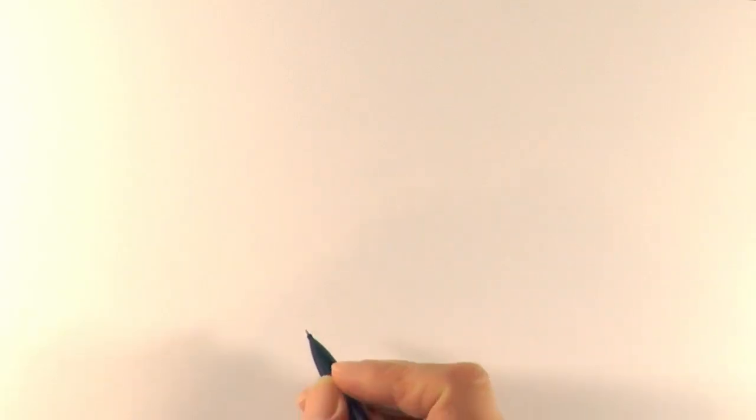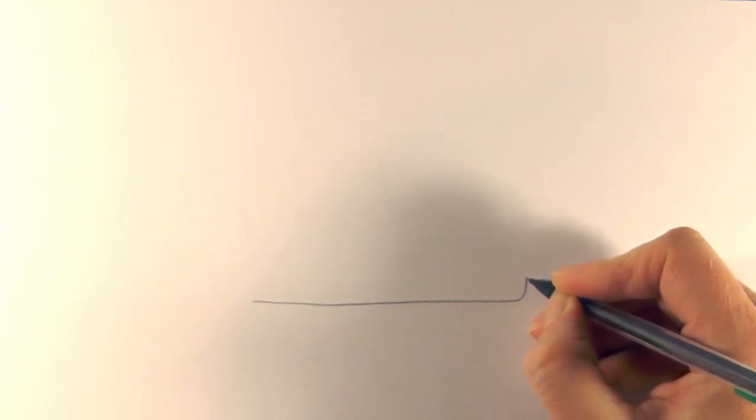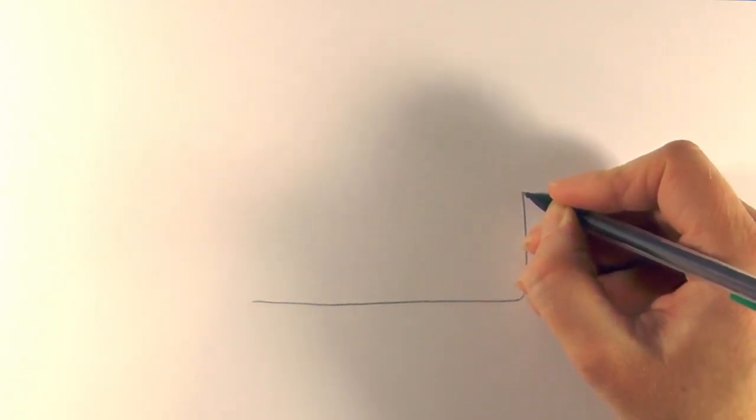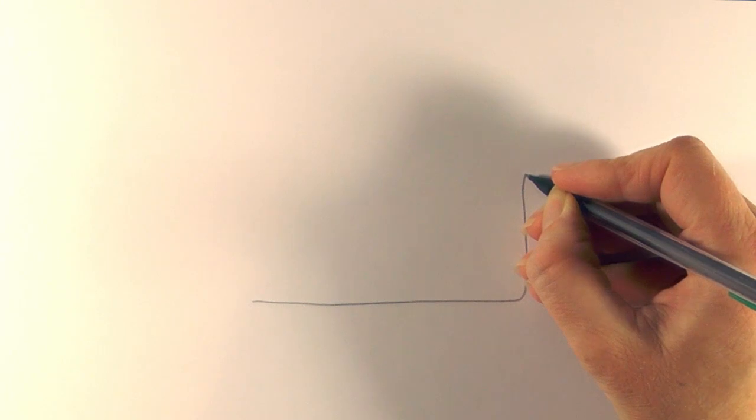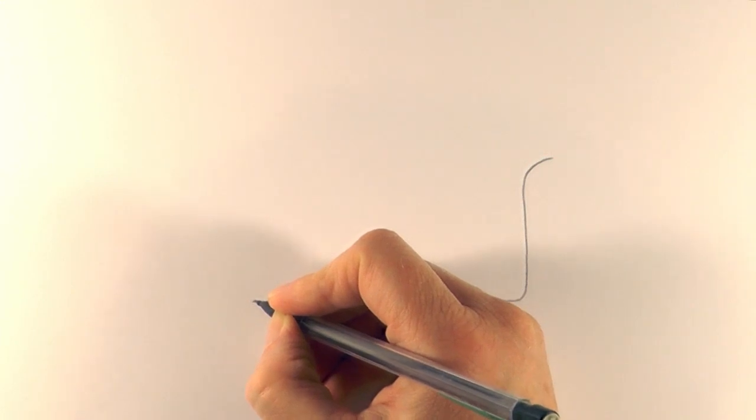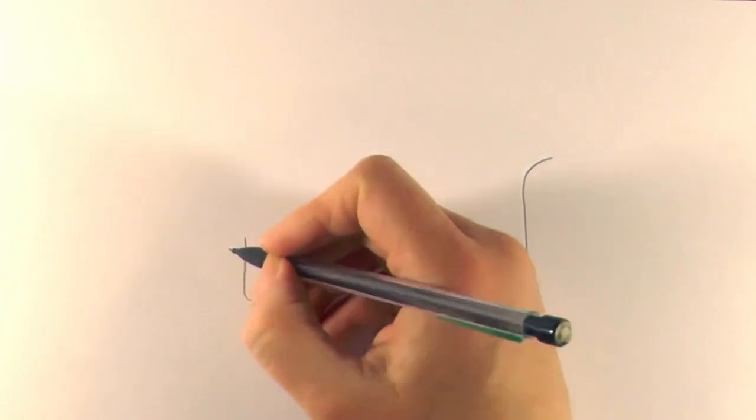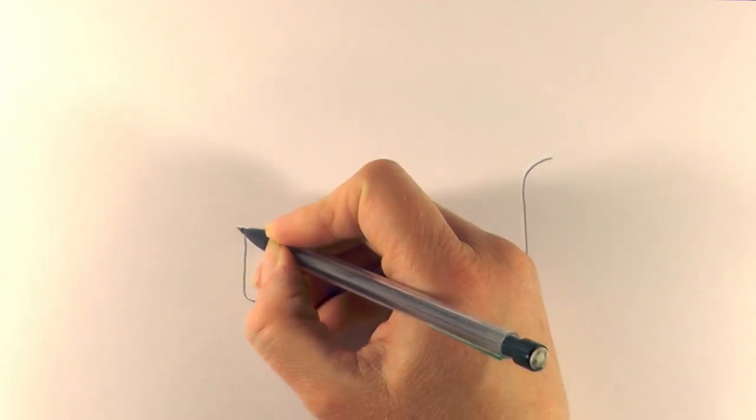So to get started, what I do is I draw a line across here and I'm just going to round that line on the end and take it up like that and curve it like that. And then on this end as well, just curve it up. We don't take it up as high as that back one, and then curve it out like that at the front.